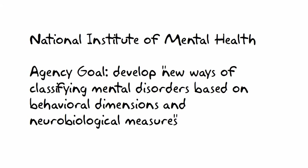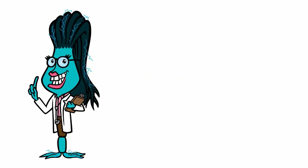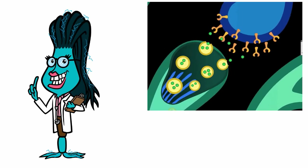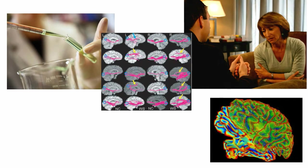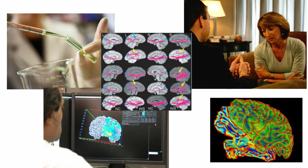RDoC grew out of an agency's goal to develop new ways of classifying mental disorders based on behavioral dimensions and neurobiological measures. In the opinion of this humble neuron, it's a great effort because the interactions of over a hundred billion neurons in the brain are incredibly hard to understand. The need for a more systematic framework to tie together this research has only become clearer as the technologies capable of adding valuable information about brain function has increased.